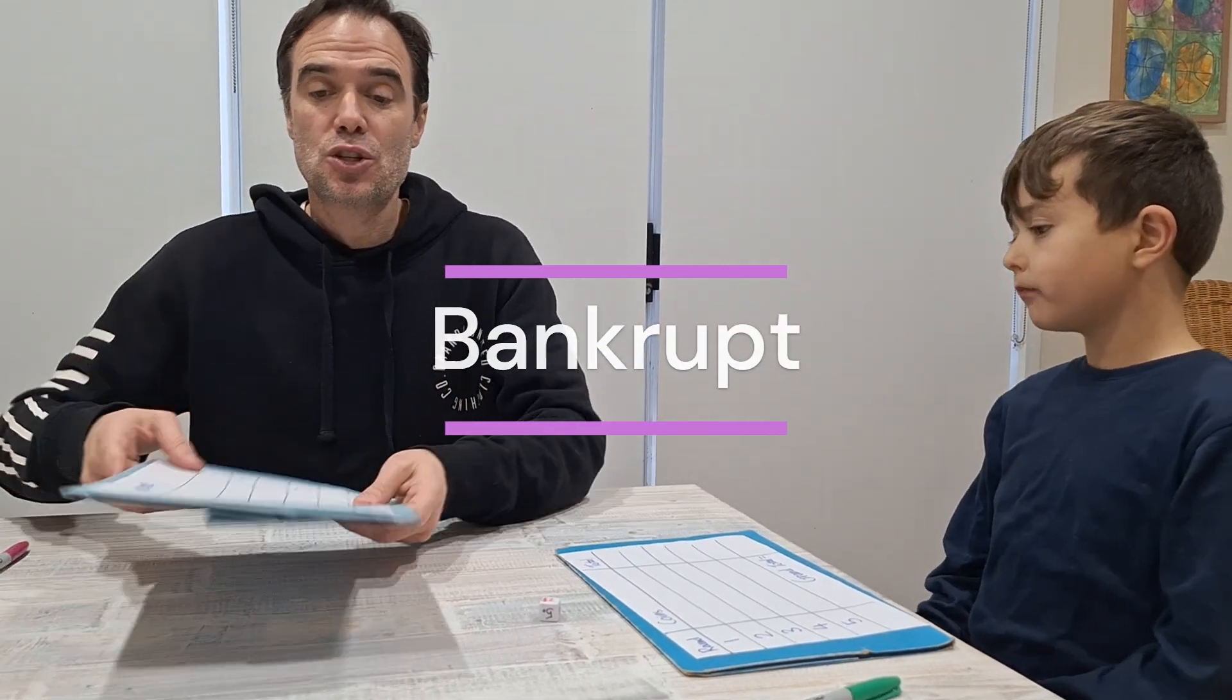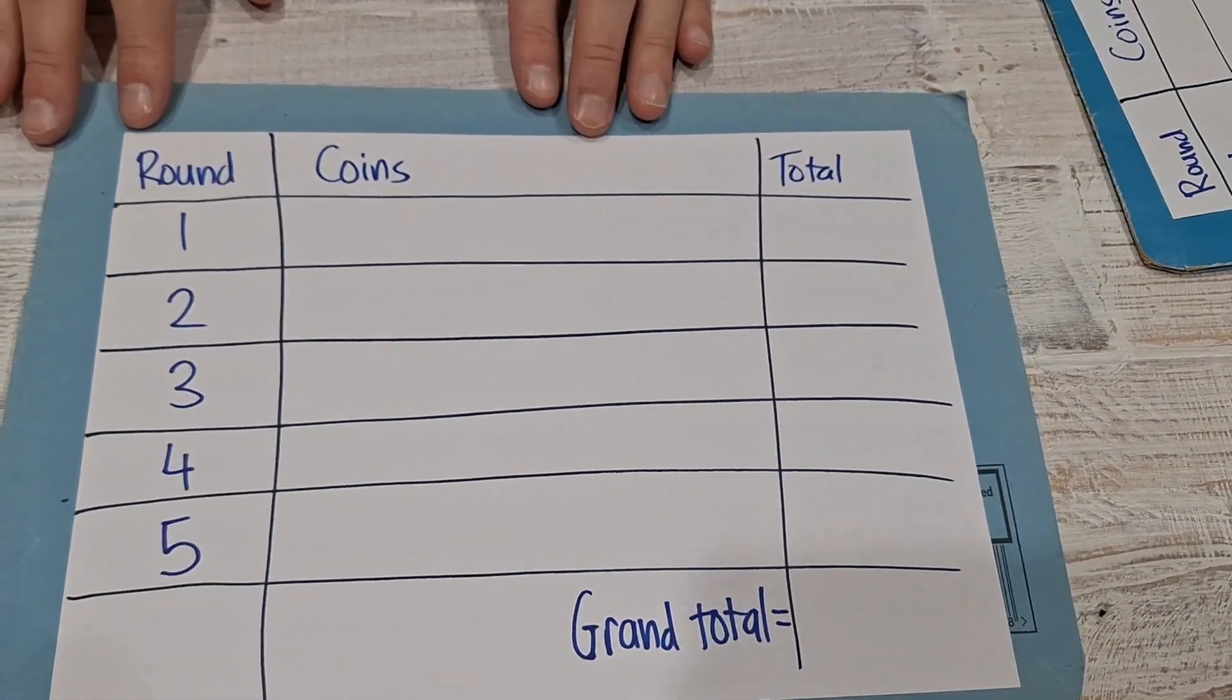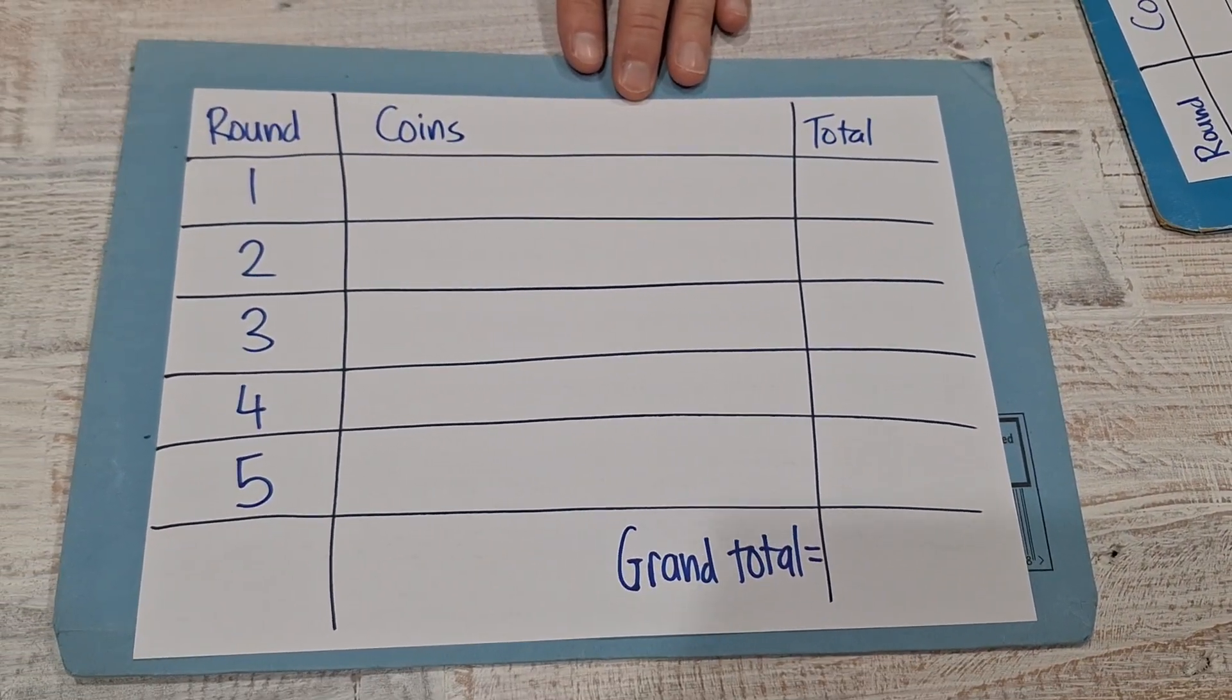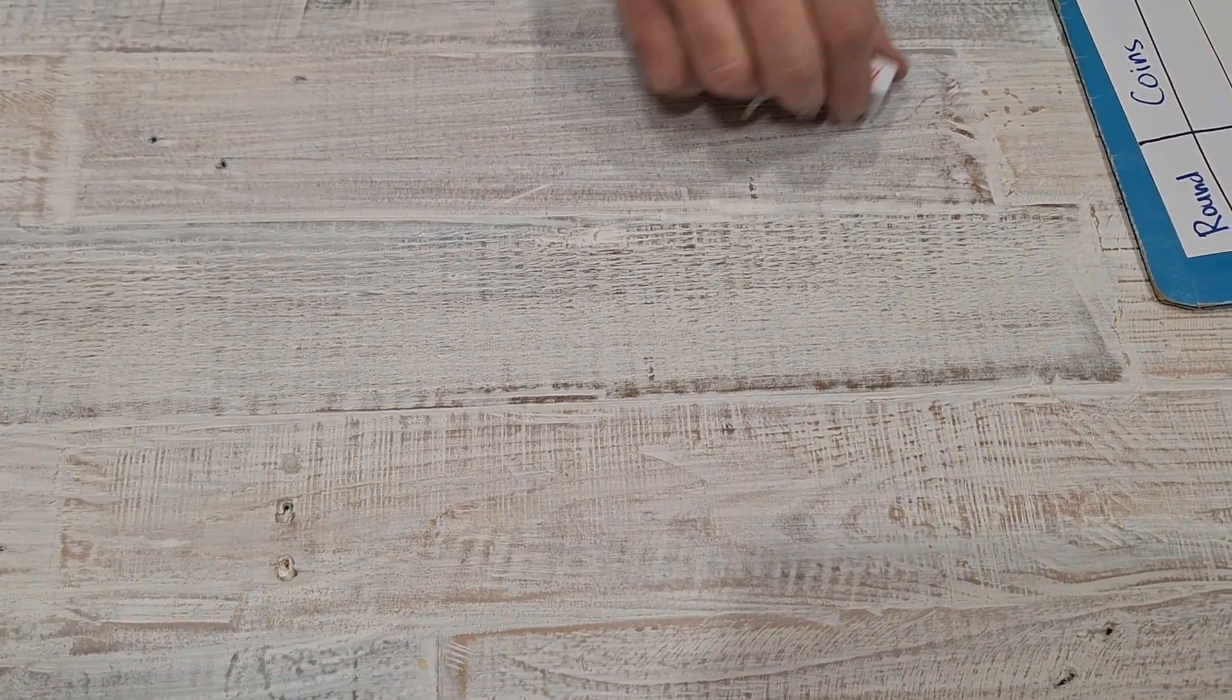To play, you need a scorecard for each player that looks like that. You don't need any professionally printed one. It'll take you 10 seconds to make that yourself. You can just pause the screen. And then you need a special dice.